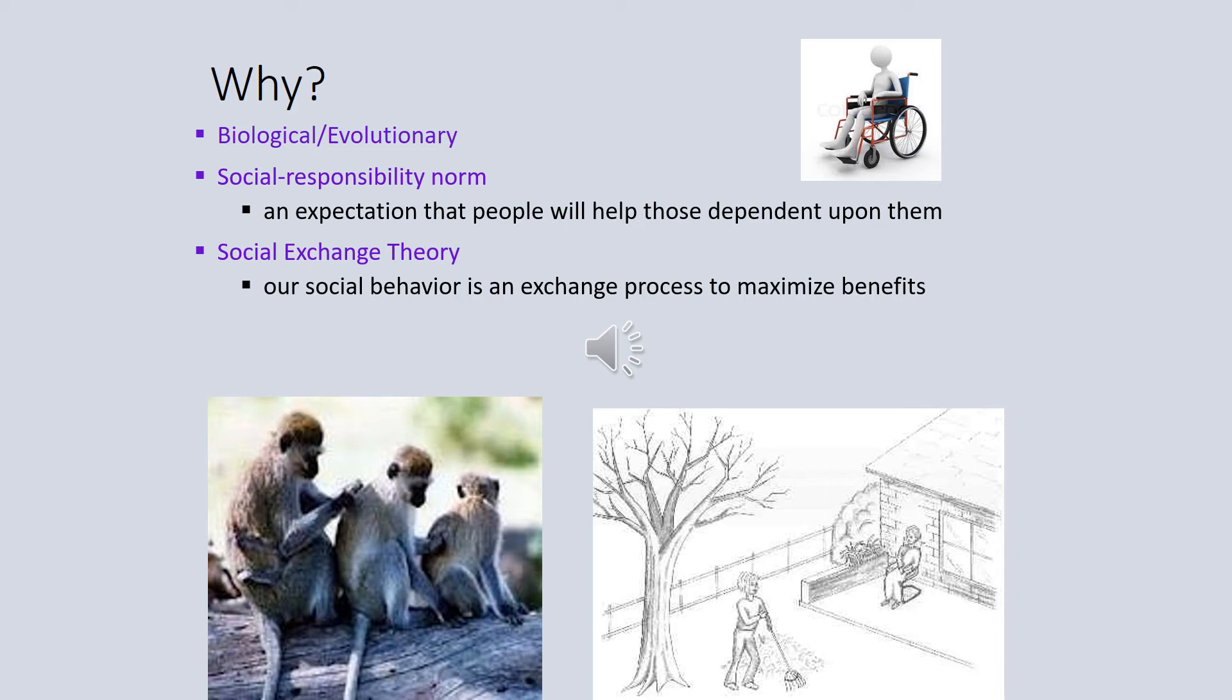The second, social responsibility norm. This is the idea that we are very helpful and do good things for those who we feel are dependent upon us, may need our help, and we are responsible for. So if you are walking into a building, you may stop and wait for someone across the parking lot if they need assistance, let's say they're on crutches or something like that, as opposed to someone who does not look dependent and helpless.